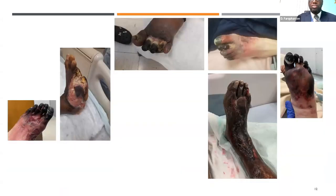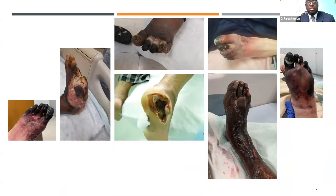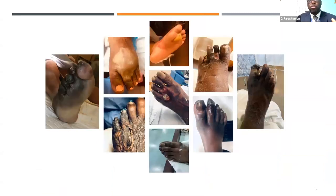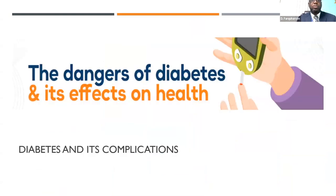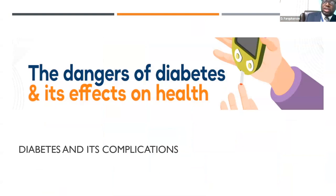Some people present with frank gangrene, and that is not a good sign. All of these people are local — they presented to institutions in various forms at different points in time. We're going to look at diabetes complications and the effects on health.